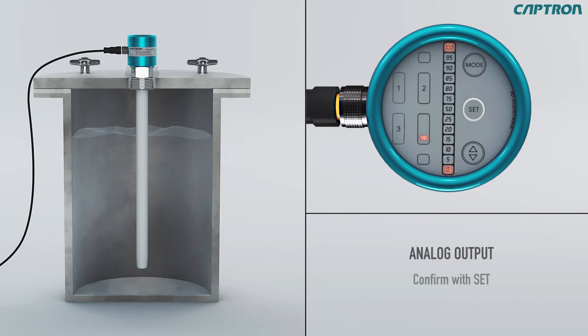If you touch set now, the adjusted value will be saved and the probe switches to measuring mode. Now the probe is operational and displays the current fill level.